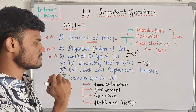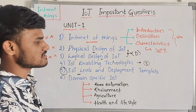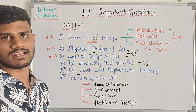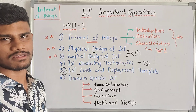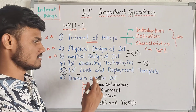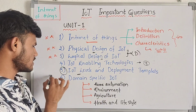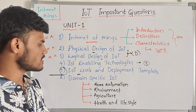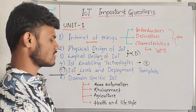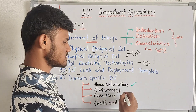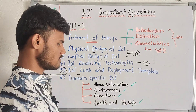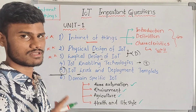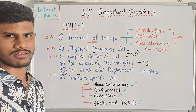The fifth question is levels of IoT deployment. The second part is domain-specific IoT. In domain-specific IoT, we have home automation, environment, agriculture, and health and lifestyle.